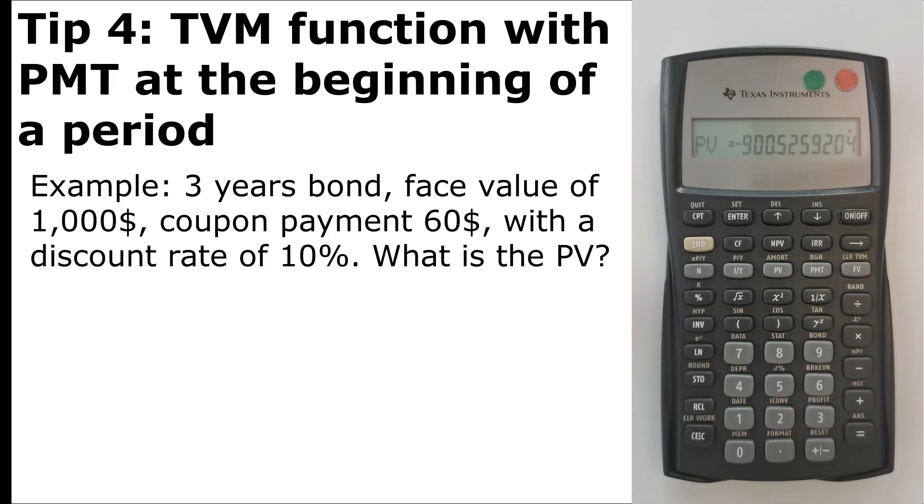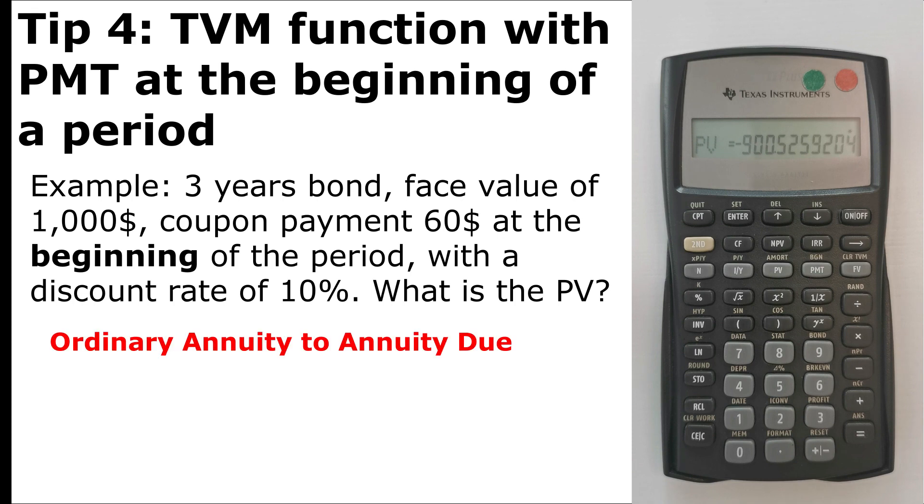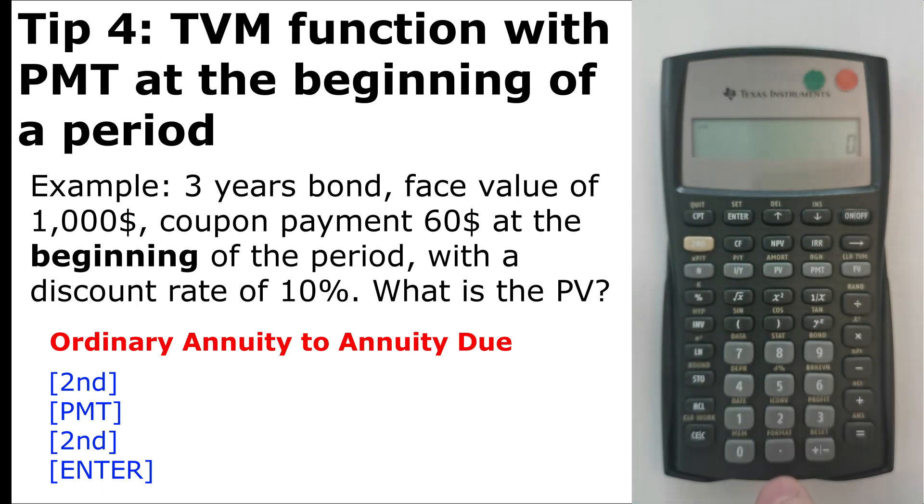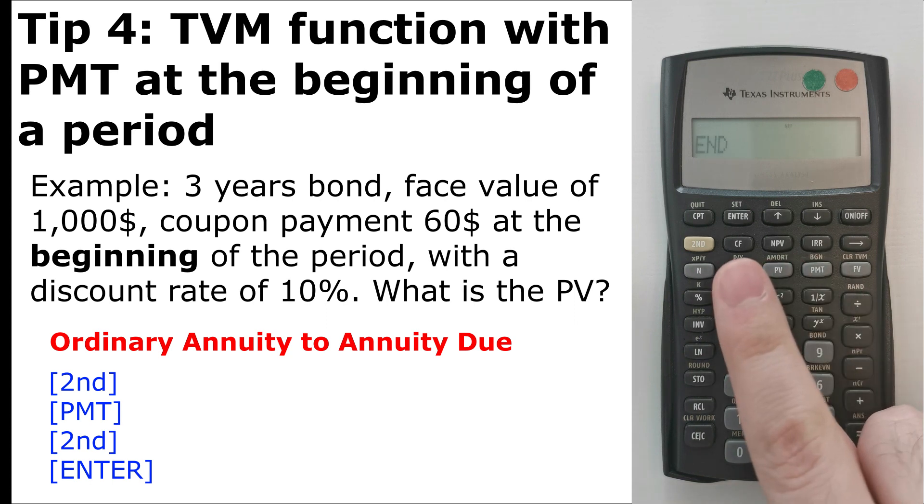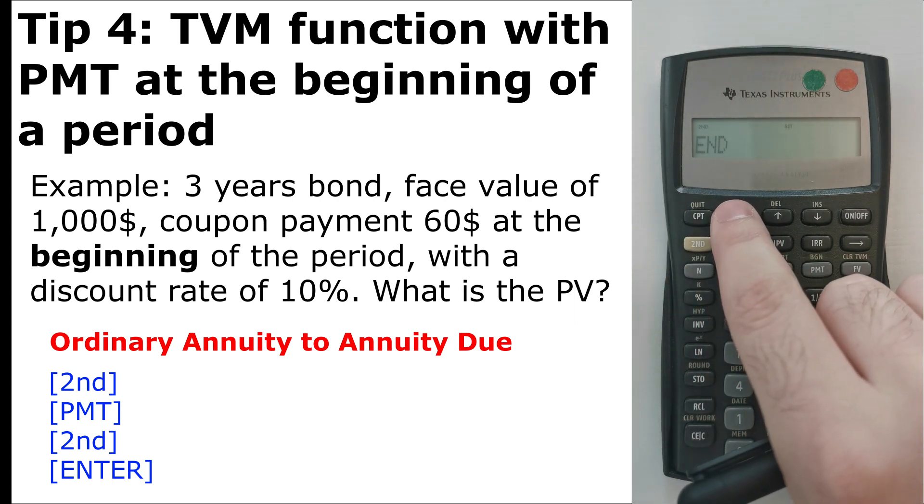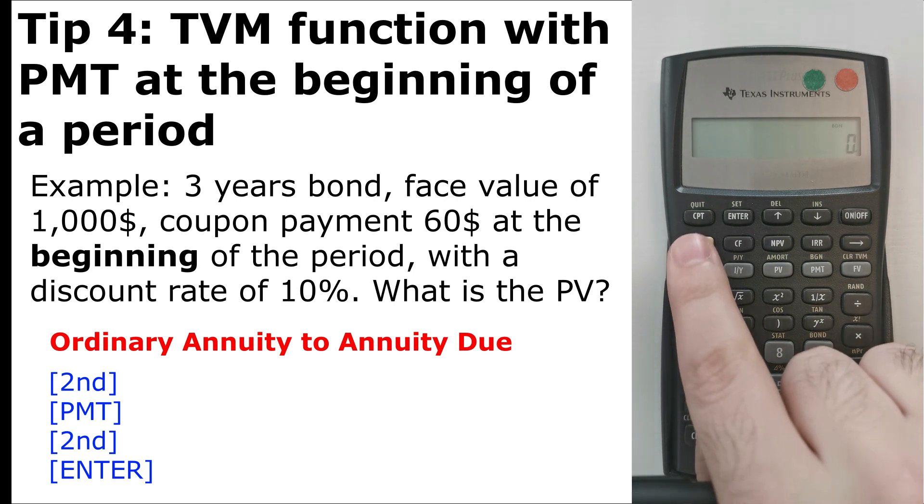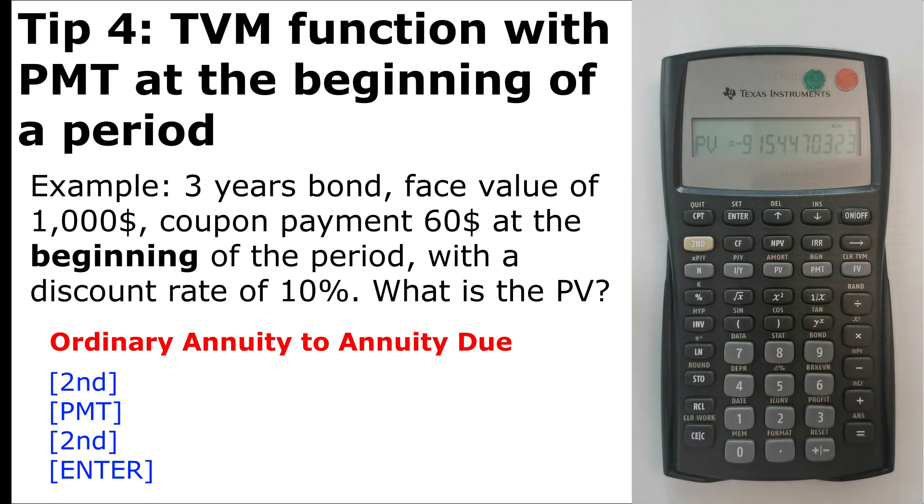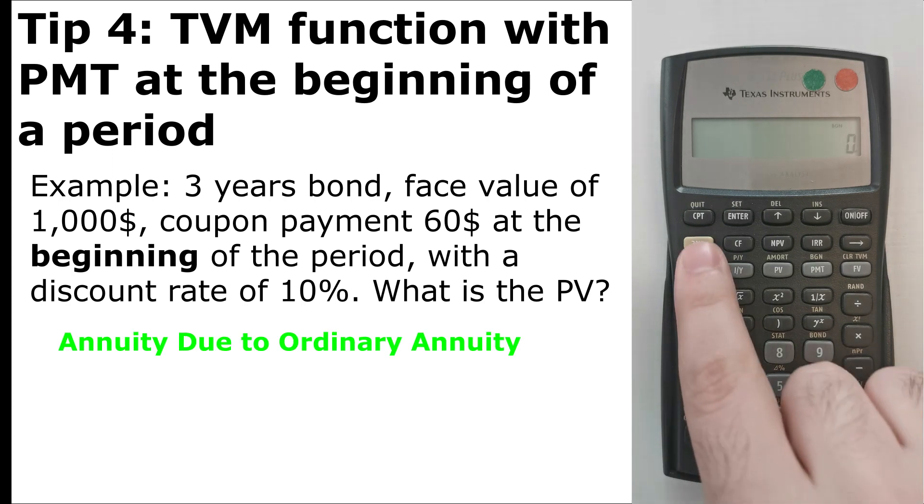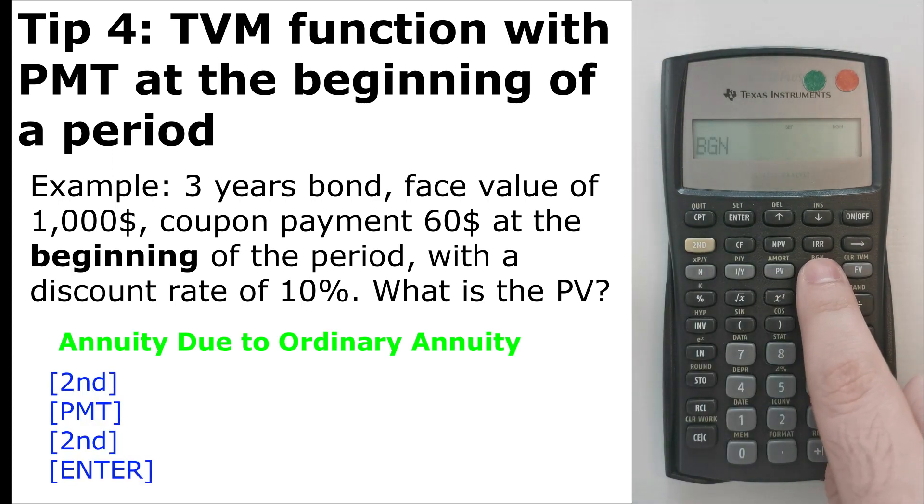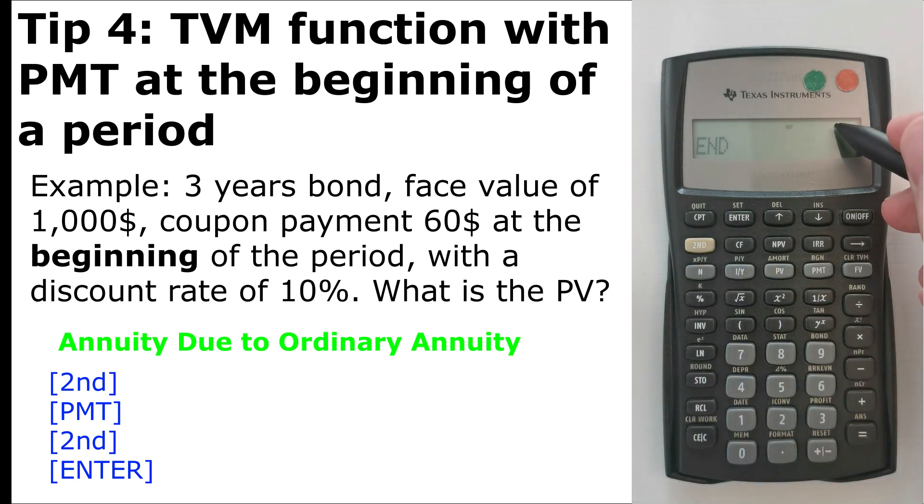So in this question, payment occurred at the end of the period. However, you could get questions in the exam where the payment occurred at the beginning of the period. So you need to switch the calculator from ordinary annuity to an annuity due. To switch it on the calculator, we press second, then payment. As you can see, it's set on end. Press second again, and enter. Now it's beginning, and you can see this little BGN here. So if you want to calculate now the present value with an annuity due, press compute, present value, we get minus 915. If you want to switch it back to ordinary annuity, you press the same process: second, payment, second, enter, and the BGN was cleared.